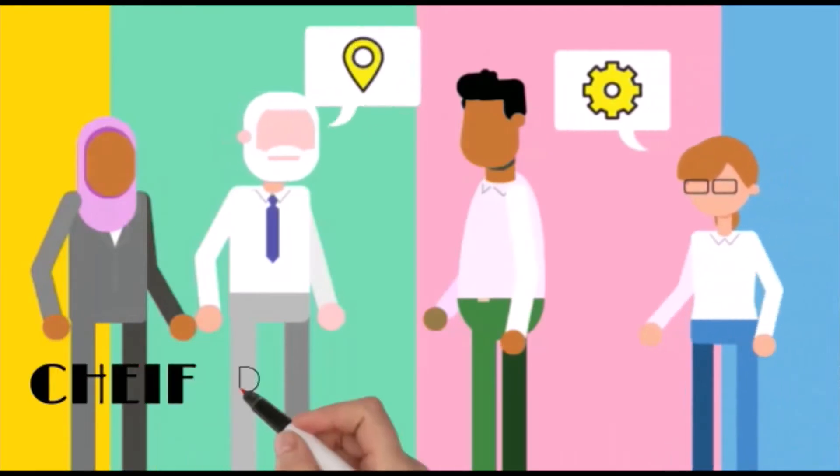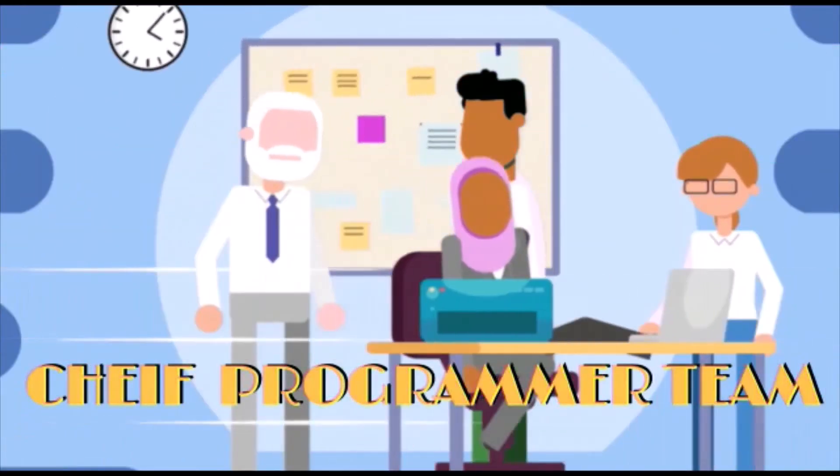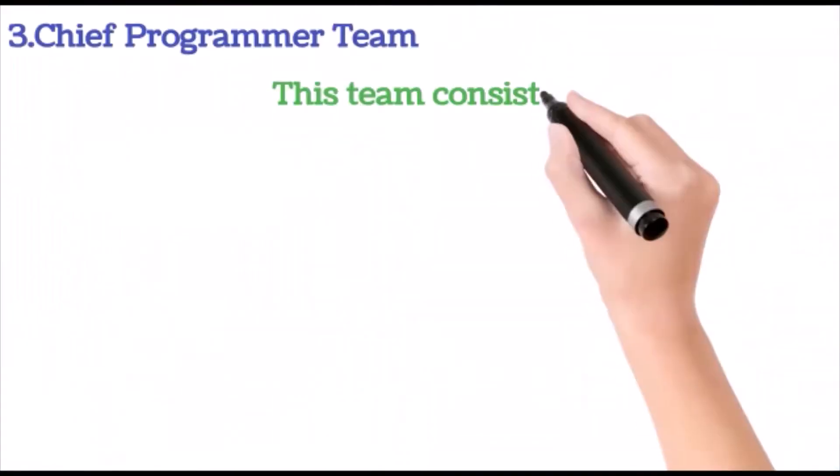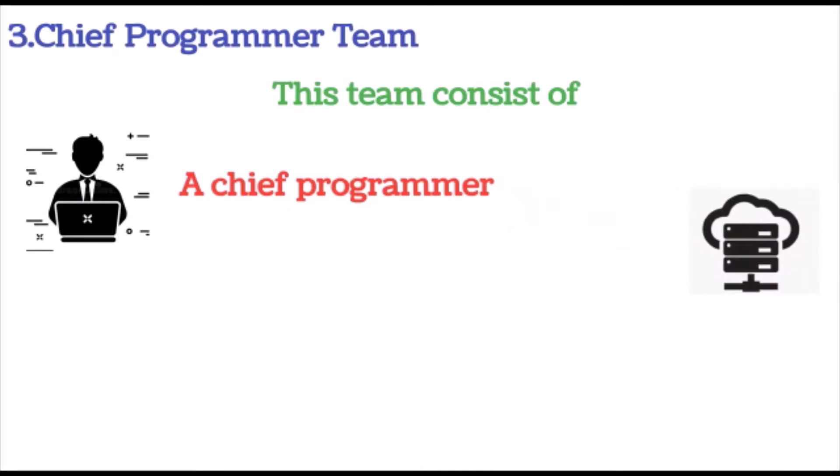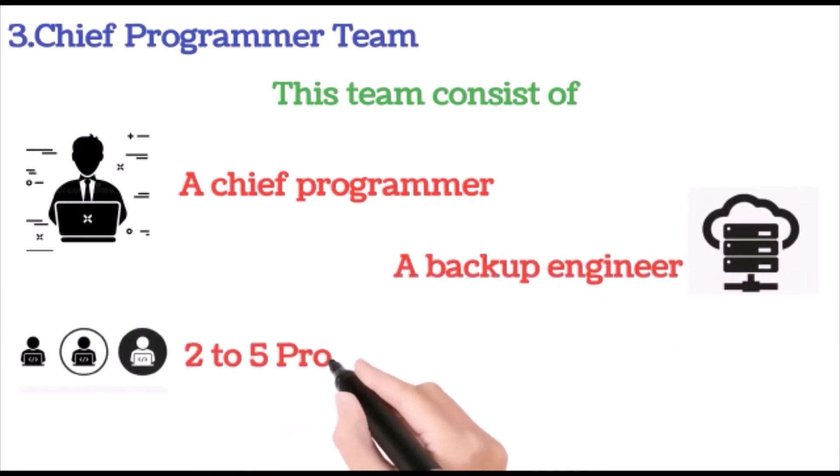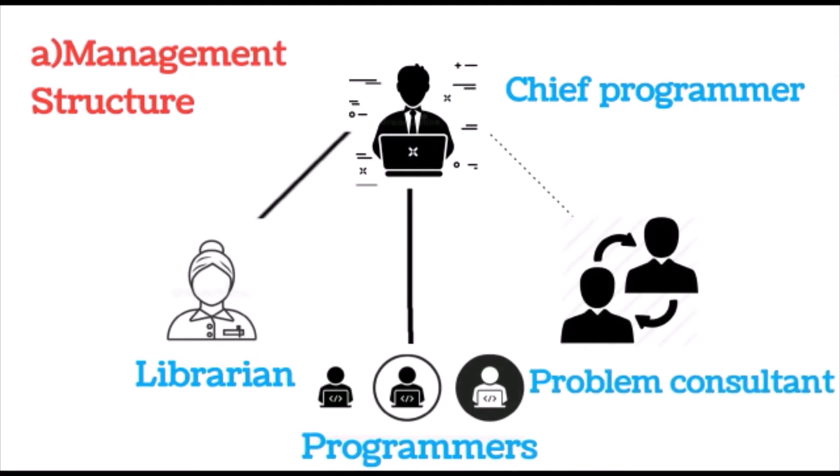Next is chief programmer team. This team consists of a chief programmer, a backup engineer, two to five programmers, and a librarian. Here everyone will be working under the chief programmer.